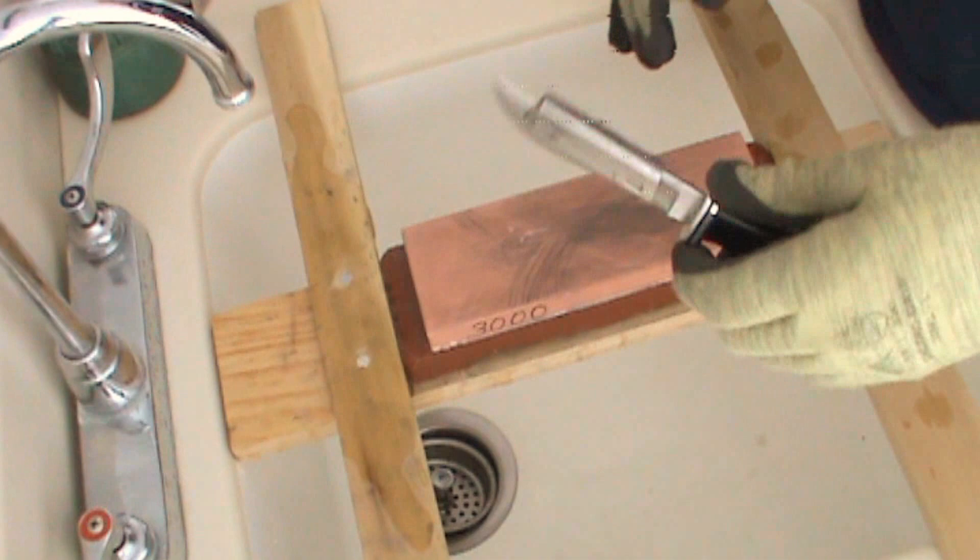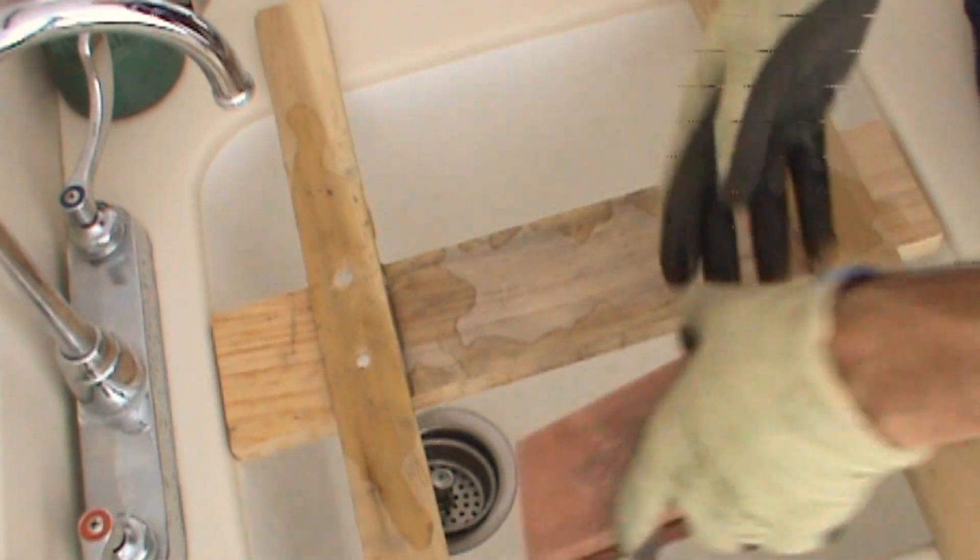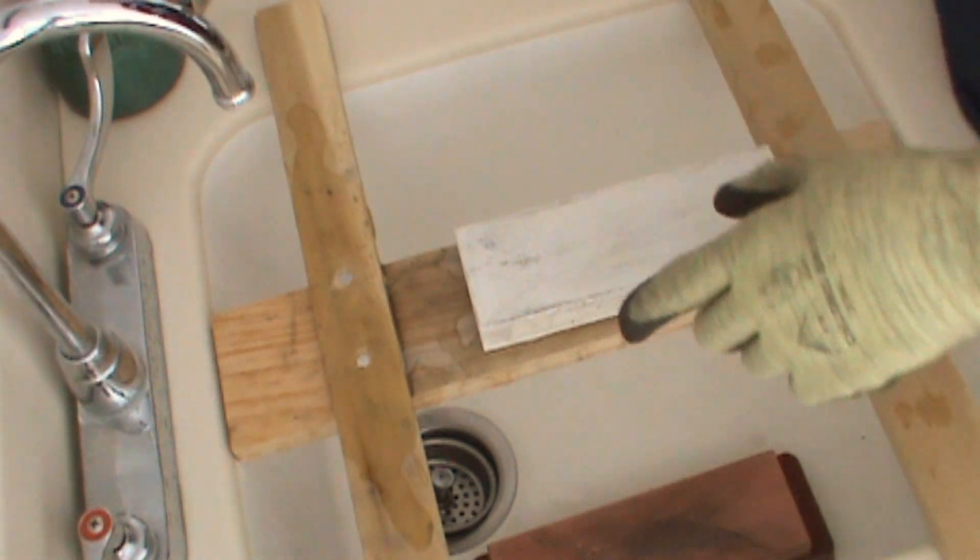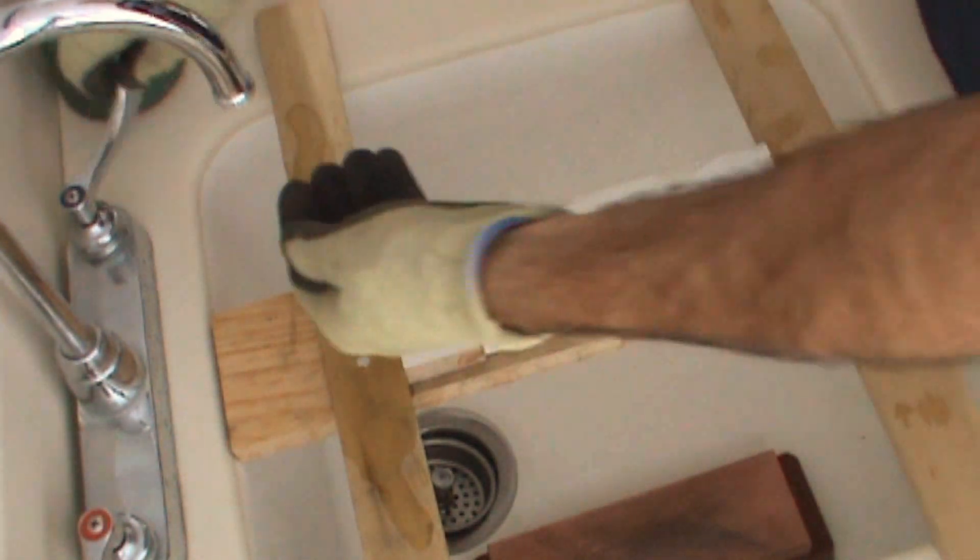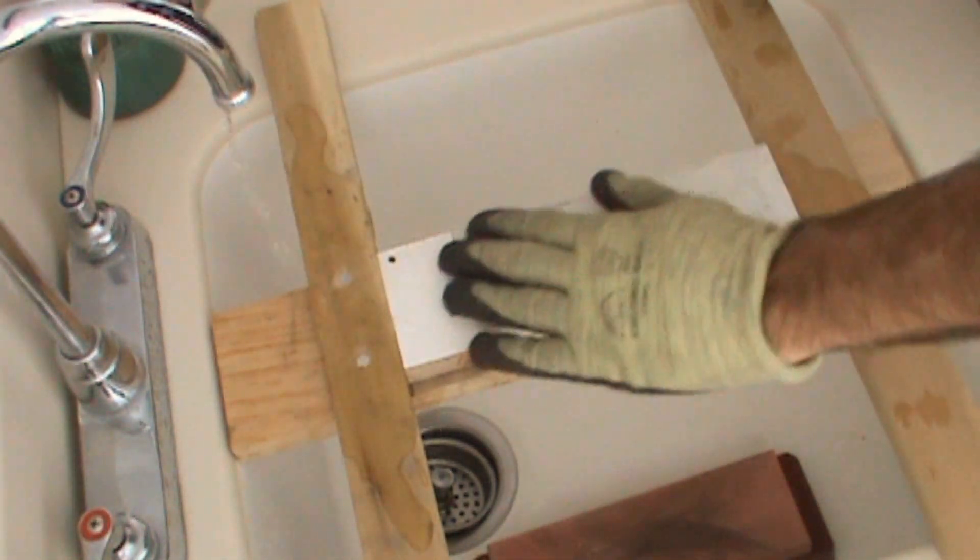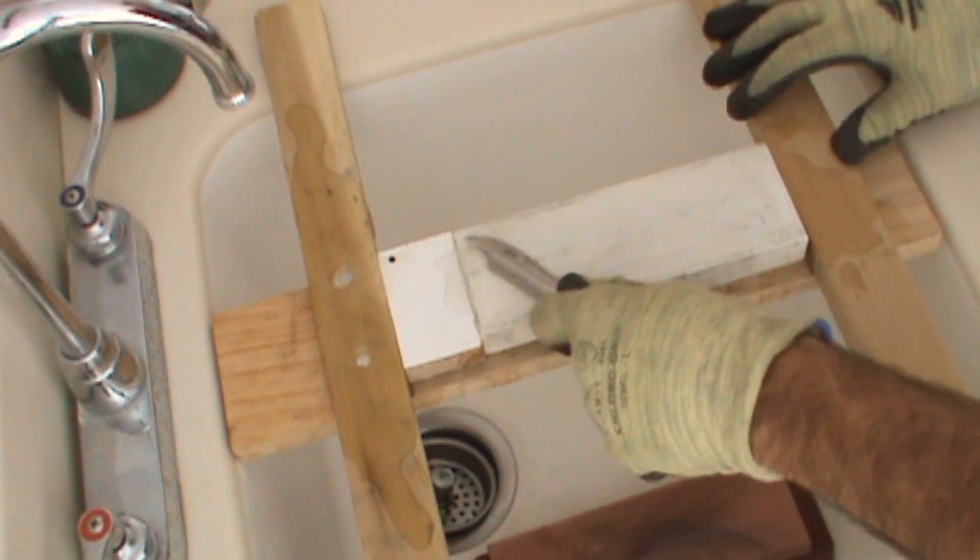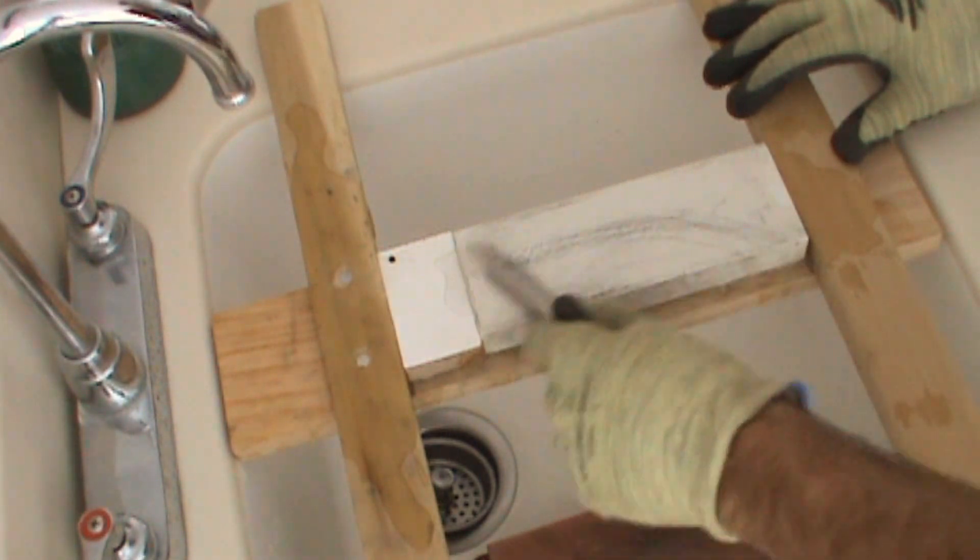Once you do a few strokes on each side, you can switch to the finer stone. Leave that one in the sink. This is an 8,000. I've added a piece of wood so the stone fits nicely. Same deal. A little bit of water on here. We're going to do maybe 15 or 20 on each side.